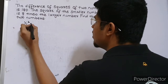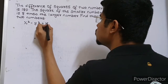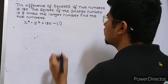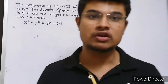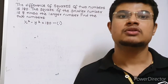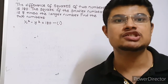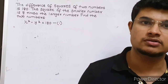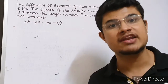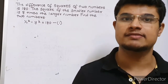Therefore x squared minus y squared is equal to 180. I will call this equation 1. The square of the smaller number is 8 times the larger number. We need to be very careful to consider which is the larger number and which is the smaller number. x will be the larger number because x squared minus y squared is giving me a positive value, that is 180.